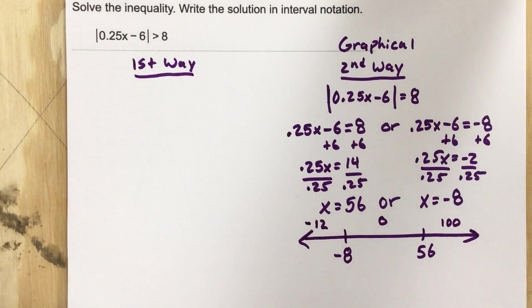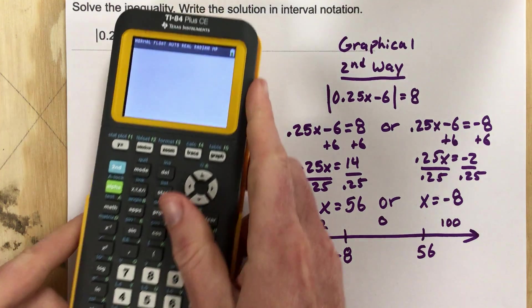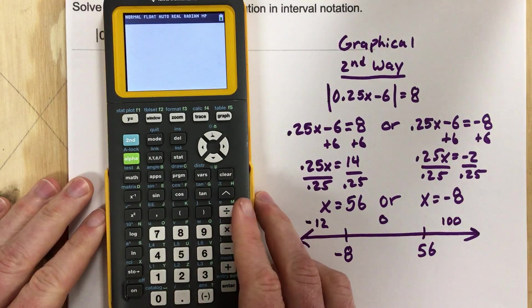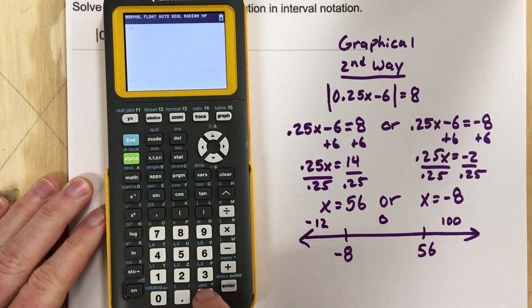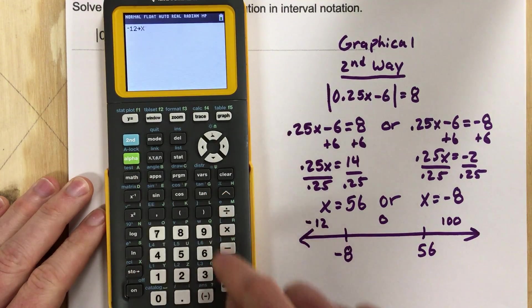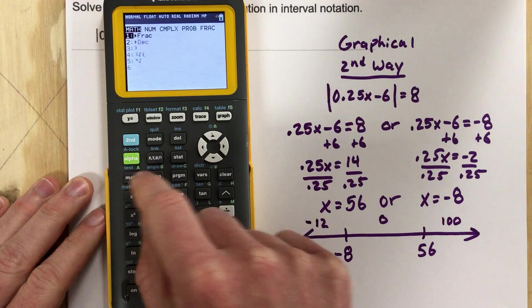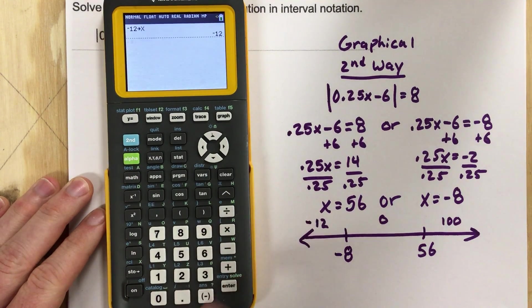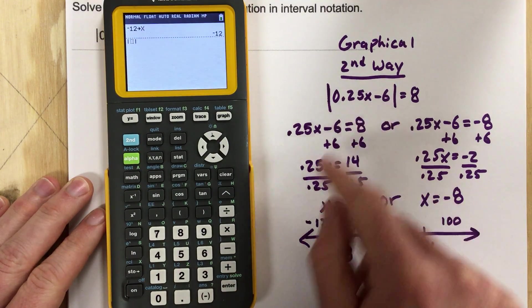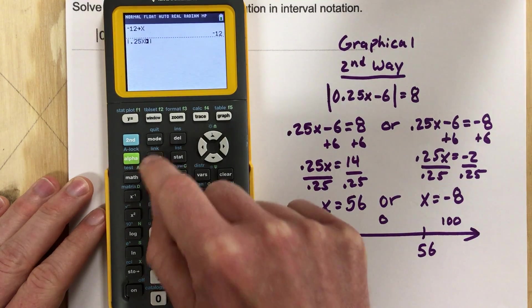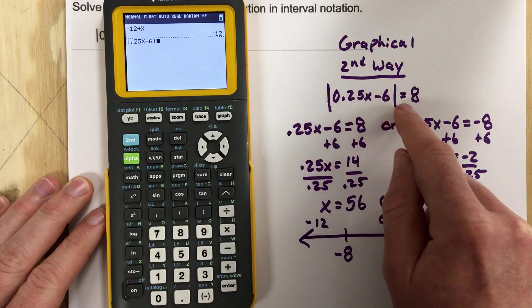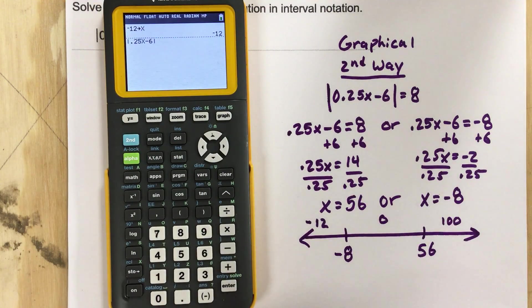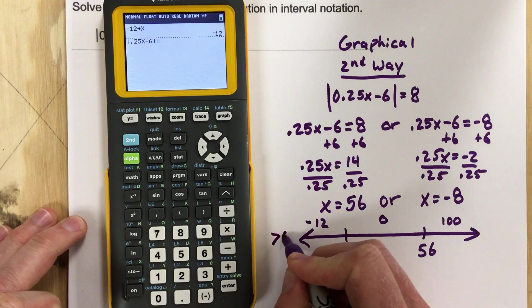So when I test this, I'm going to plug in negative 12, I'm going to store it as x, and then I'm going to use the math button, the absolute value button to type in this 0.25x minus 6. And I'm checking to see is it going to be greater. So if we go back to this, and I should mark it here, we're looking to see greater than 8.